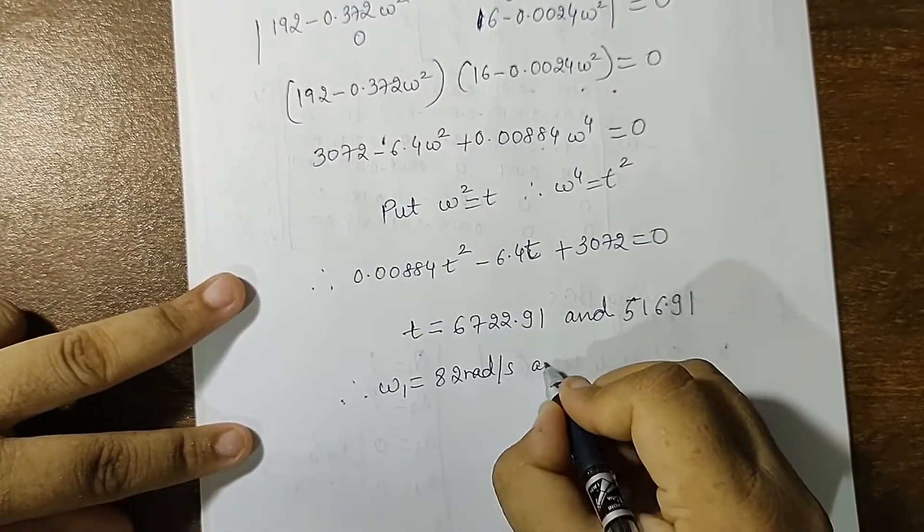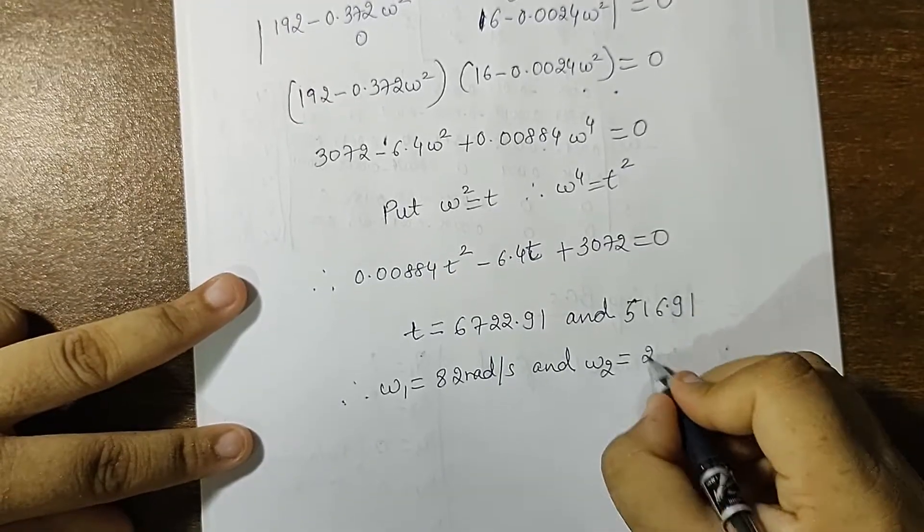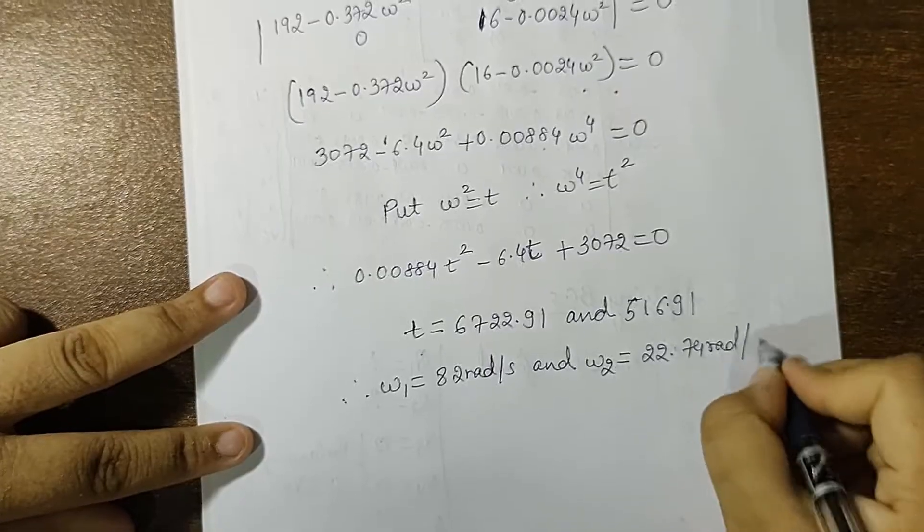So I get the value of t as 6722.91 and 516.91. Therefore I get the value of frequency as 82 radians per second and another value of omega as 22.74 radians per second.